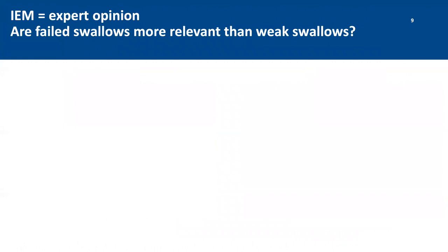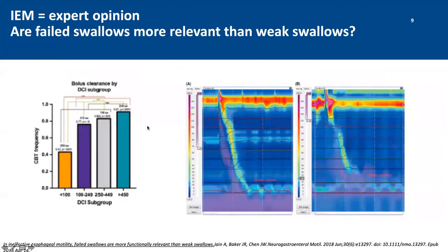The second question: are failed swallows more relevant than weak swallows? They are shown to be, yes, more relevant. Swallows with a DCI less than 100, classified as failed swallows, had a much lower bolus clearance compared to swallows classified as weak or normal. Bolus clearance may be more impaired in patients with failed swallows, and therefore this could produce more dysphagia as opposed to weak swallows.